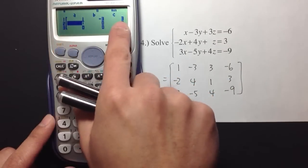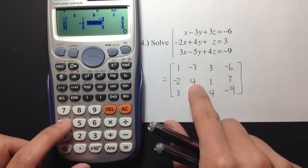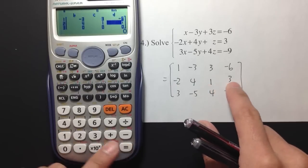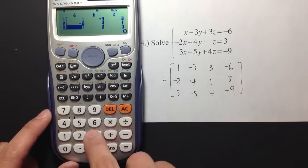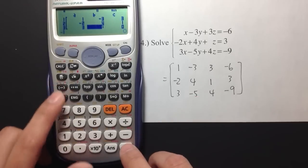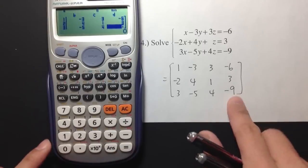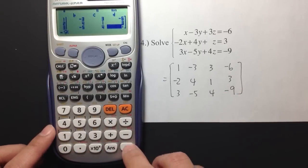Now, move to the second row. Negative 2. Positive 4. Positive 1. And then, positive 3. And then, the last row. 3. Negative 5. And then, 4. And then, negative 9. Negative 9.